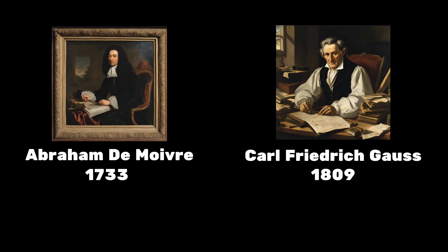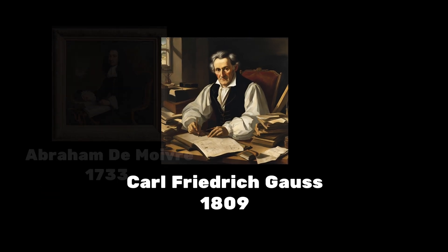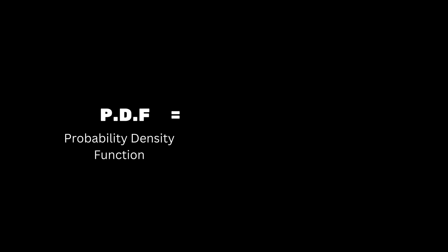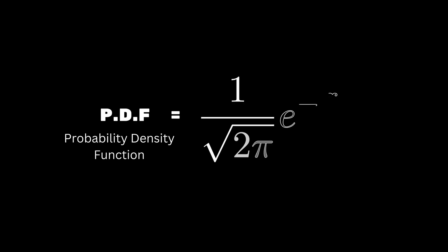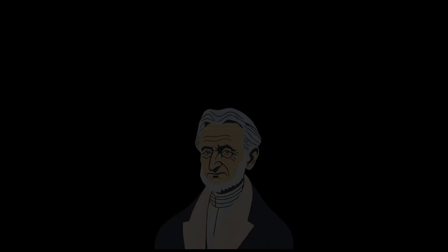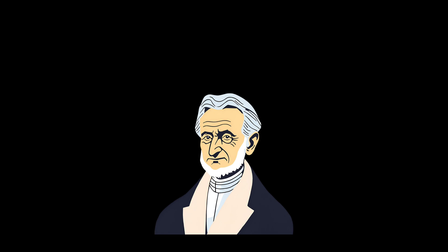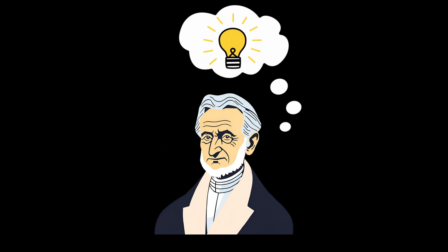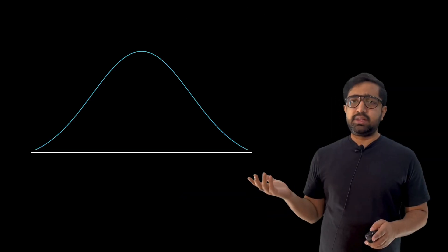Now we are left with Mr. Gauss, who actually gave the PDF equation — 1 upon root 2π · e to the power minus x² / 2. Let's get into the brain of Mr. Gauss and try to find what he was thinking when he was deriving the normal distribution. We all know that the normal distribution is a bell curve, something like this.